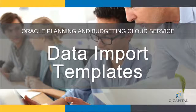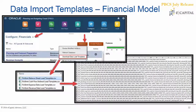You're now able to download data templates from the financial module. You just go to where you would configure your financials, and there's an action button with a 'Download Data Load Templates' option. It actually gives you four different files: one for a balance sheet, capital expense, and then finally revenue.